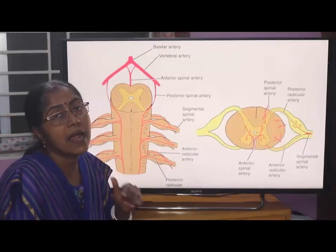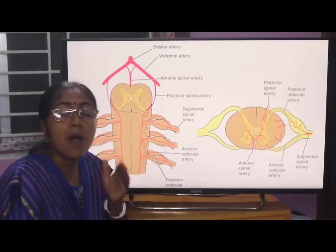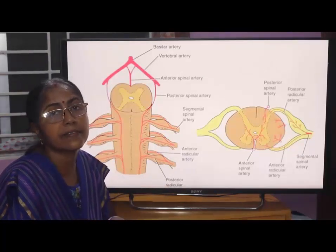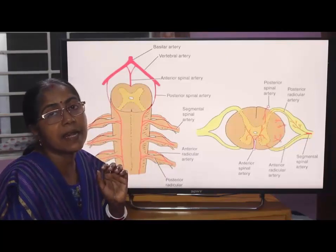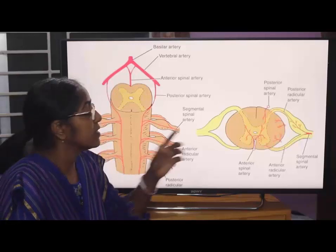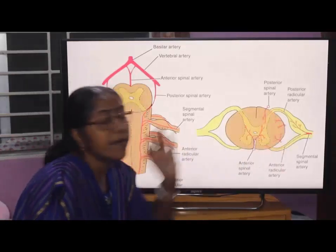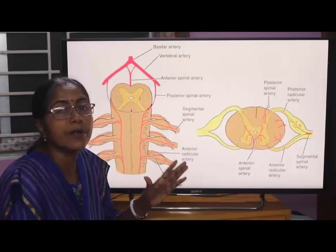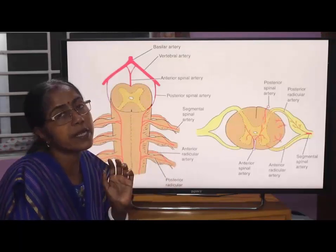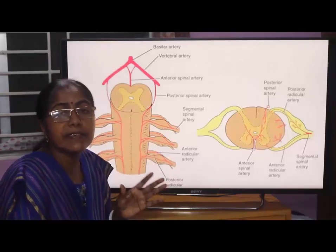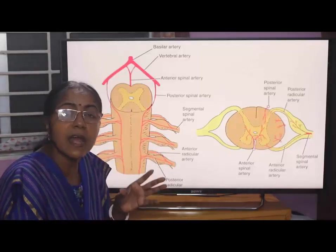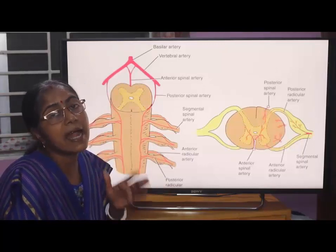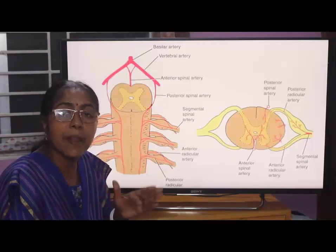The small segmental arteries arise from outside the vertebral canal, such as from the deep cervical, intercostal, and lumbar arteries. After entering into the vertebral canal, each segmental artery diverges into anterior and posterior radicular arteries, and they accompany the ventral and dorsal roots of the spinal cord. They reinforce the anterior and posterior spinal arteries. In addition, there are some feeder arteries which enter into the vertebral canal and anastomose with the branches of the anterior and posterior spinal arteries to supply the spinal cord.